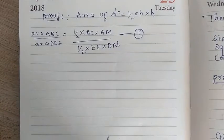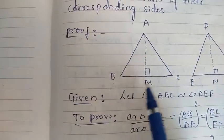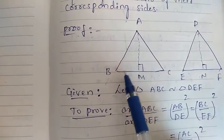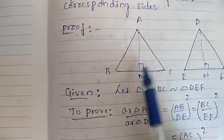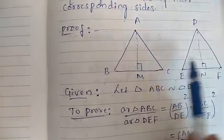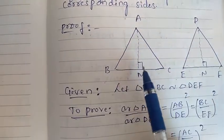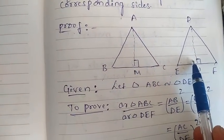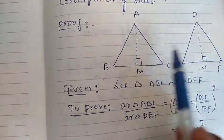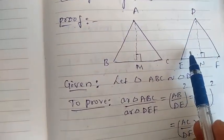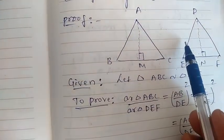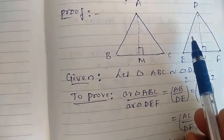Next, in triangle ABM and triangle DEN — in these two triangles, angle B is equal to angle E because both are similar. Both similar means their corresponding angles are equal. And angle M is equal to angle N because each is 90 degrees. So you can say that both triangles are also similar by AA similarity criteria.